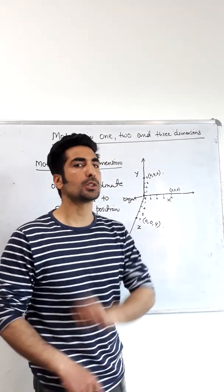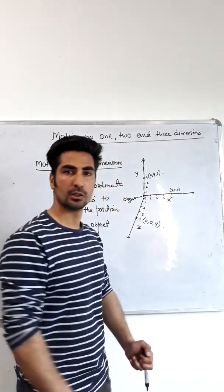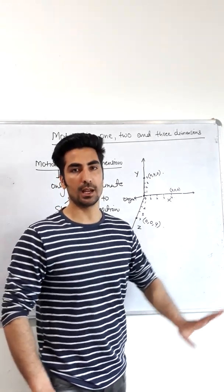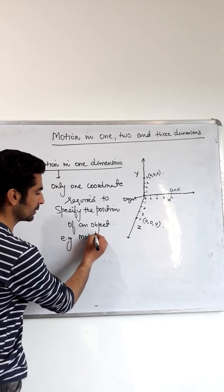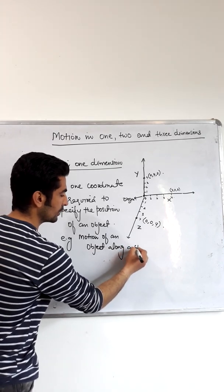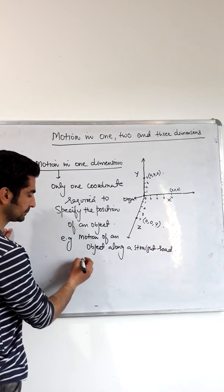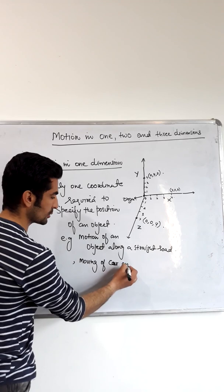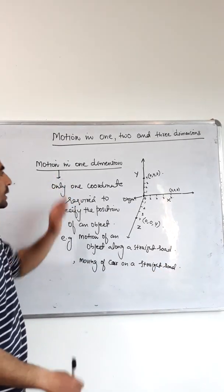We call this motion in a straight line. If you are in a car on a straight road going straight, your motion will be motion in one dimension. The motion of an object along a straight road is called linear motion. We also call this linear motion.